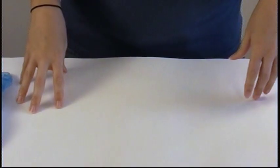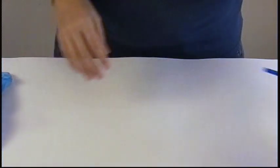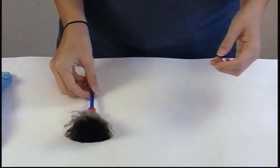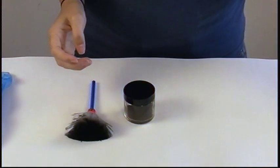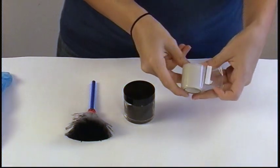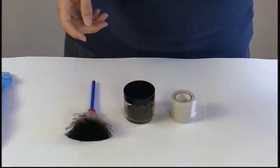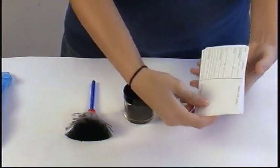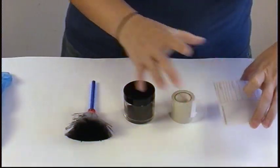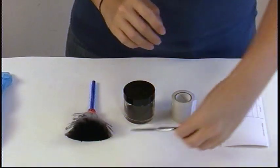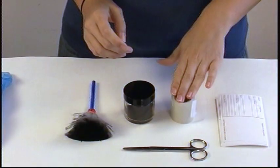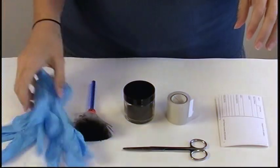So the tools that we'll be using today for our latent print development are our fiber brush, our black powder, fingerprint lift tape, we have fingerprint cards that we will transfer the print that we lift onto, and of course a pair of scissors for the tape. And we have gloves.